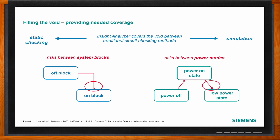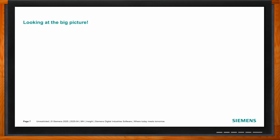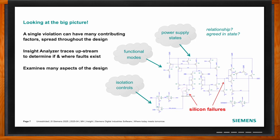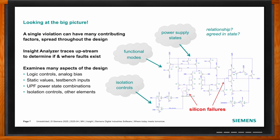Several features really set Insight Analyzer apart from other verification tools. It allows the designer to set up power supply states, functioning modes, and isolation controls, and can identify many different forms of violations spread throughout the design. The built-in automatic circuit recognition goes through before running any checks and identifies key structural elements of the design — recognizing functional pieces in the netlist the way a human would.